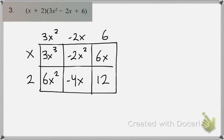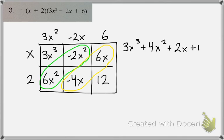And then from here, all you need to do is combine like terms. So I see I can combine those two, and I can combine these two. I'll do that in a different color. So I'm left with 3x cubed plus 4x squared plus 2x plus 12.